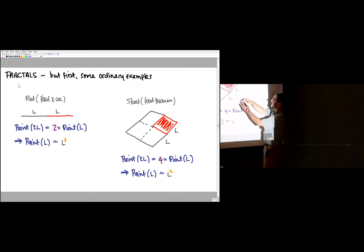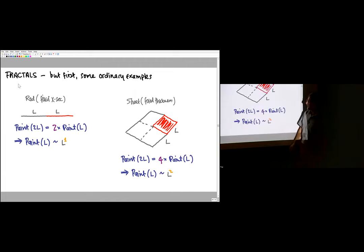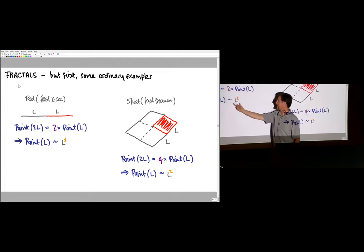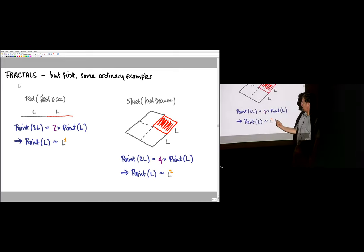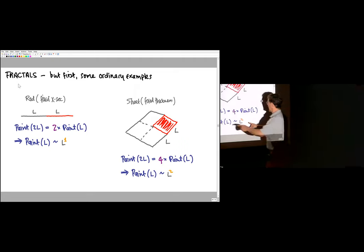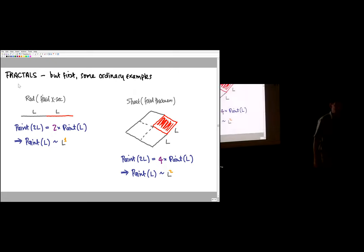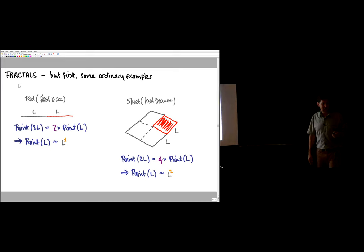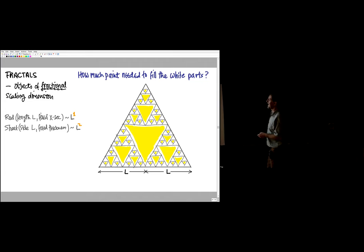What about if we had a sheet and we're not going to worry about the edges of the sheet? If we want to double the size and paint it, we need four times as much paint as we did before. We can use these two results to say that the amount of paint goes like the length of the rod to the first power, or the side of the sheet to the second power. We're going to find a strange situation that we have a power between one and two, which tells us that Sierpinski's gasket is not a one-dimensional thing. It's not a two-dimensional thing. It's something in between.